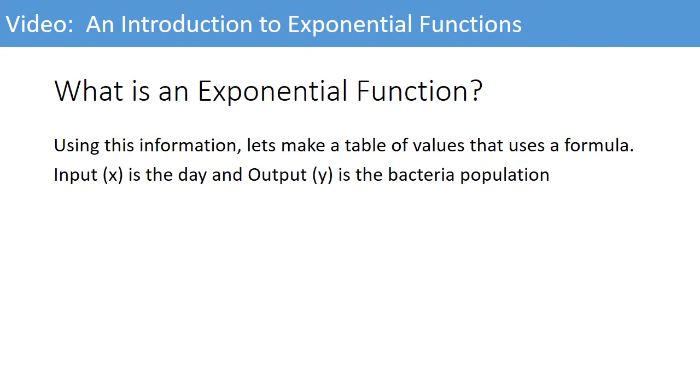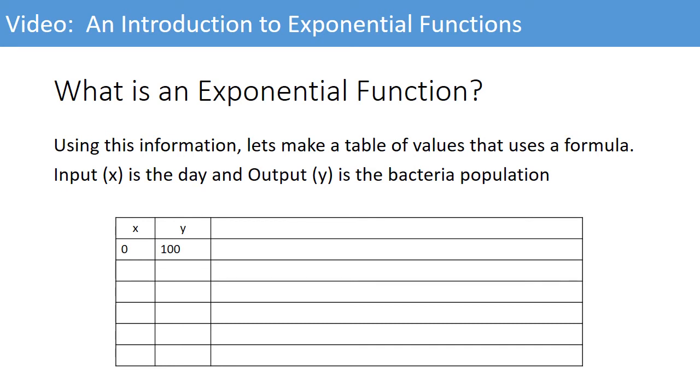Remember, the input x is the day. The output y is the bacteria population. We start at day 0. We have an initial value of 100. For 1 day, we tripled. Now, we could represent that as a formula: 100, the initial value, times 3, the growth rate, to the exponent 1, the length of time we're measuring our growth over, 1 year.